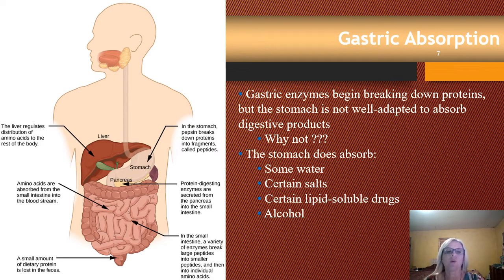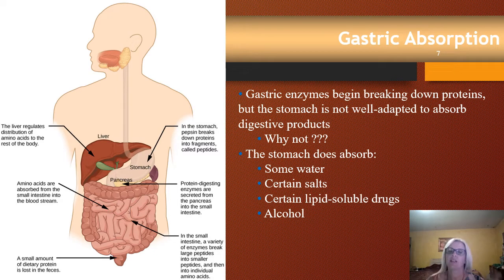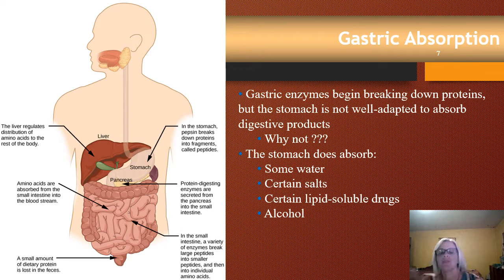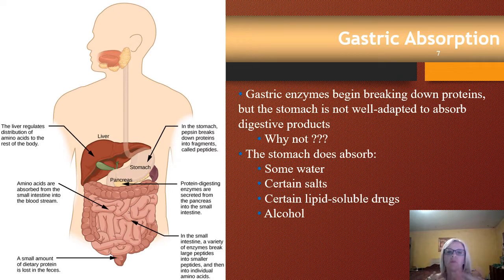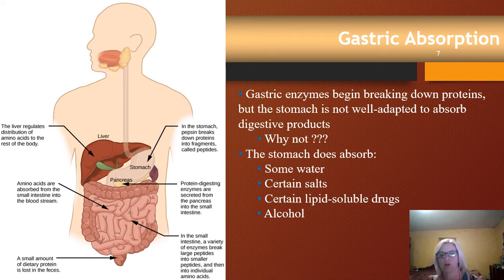The majority of absorption occurs in the small intestine. Gastric enzymes begin breaking proteins down in the stomach, but proteins are large and take multiple steps to break down, and the stomach is not well adapted for absorption — it's not designed for it. It does, however, absorb a few things like some water, salt, alcohol, and lipid-soluble drugs, but just not much.